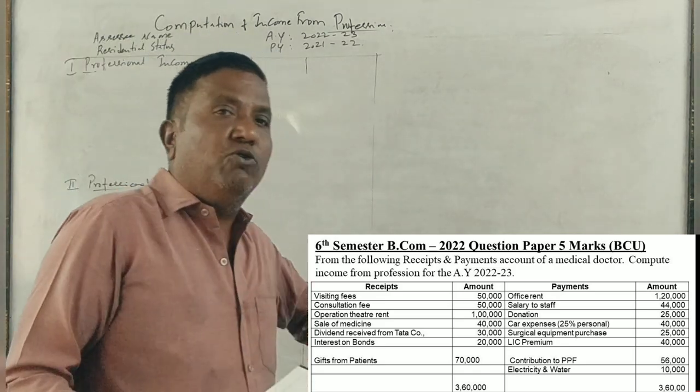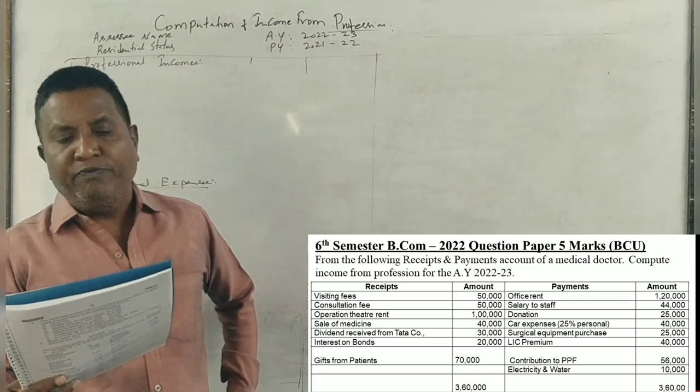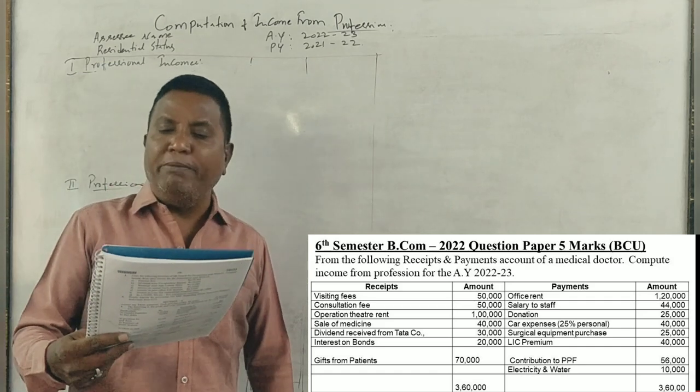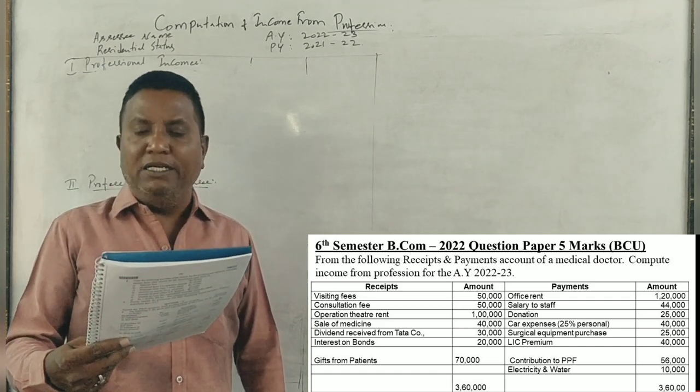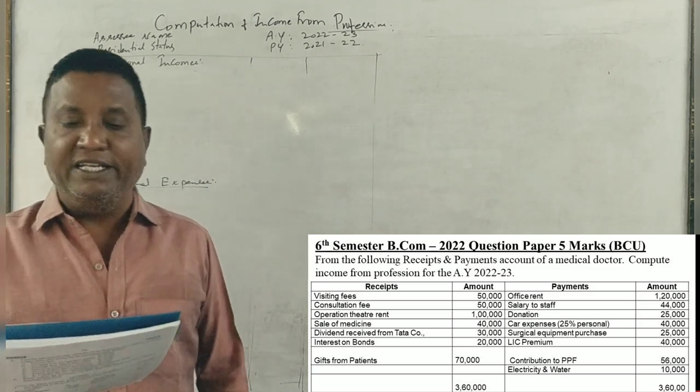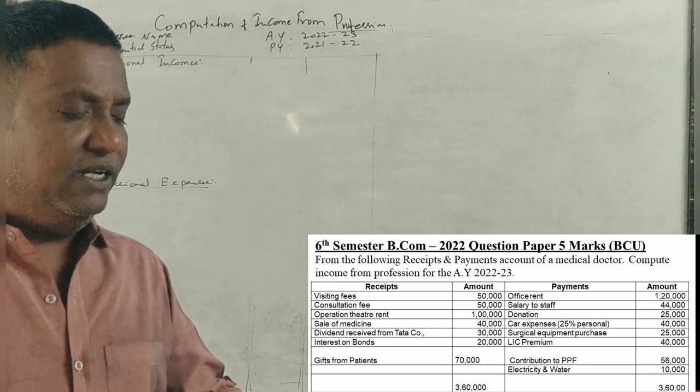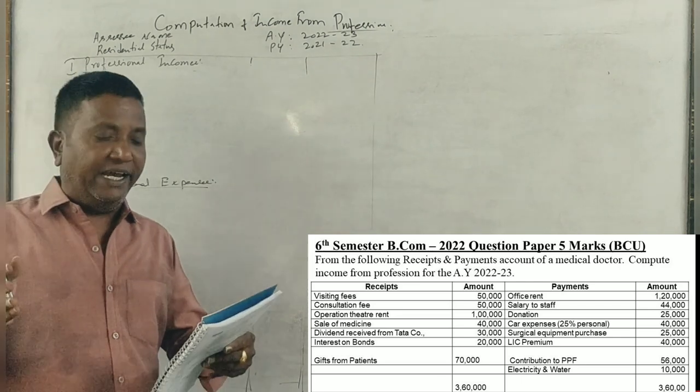The 2020-22 question paper today was a five marks question. From the following receipts and payments account of a medical doctor, compute income from profession for the assessment year 22-23.